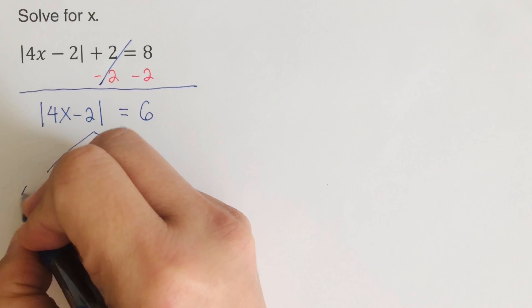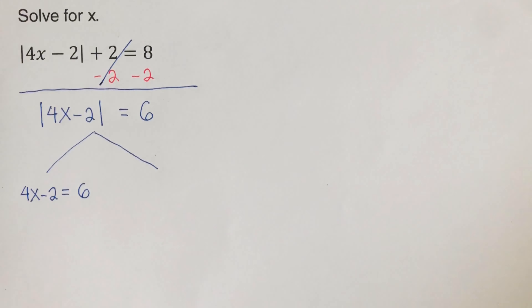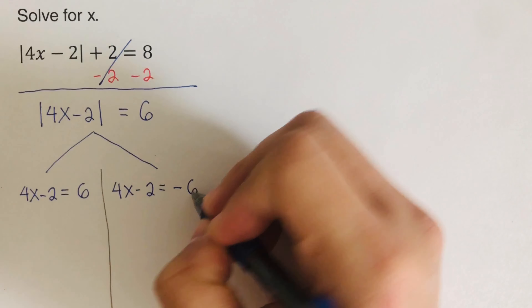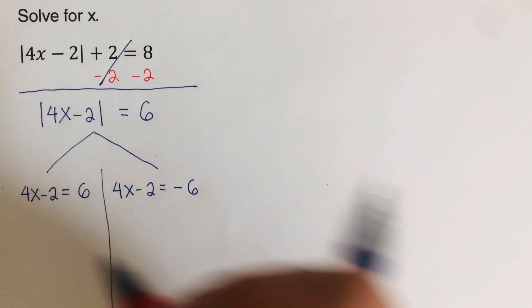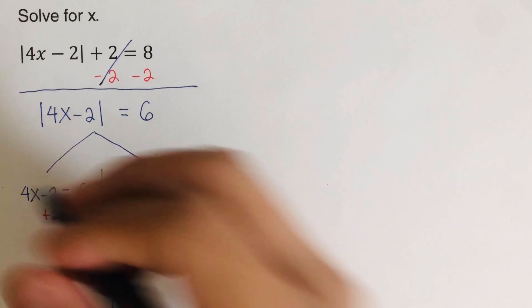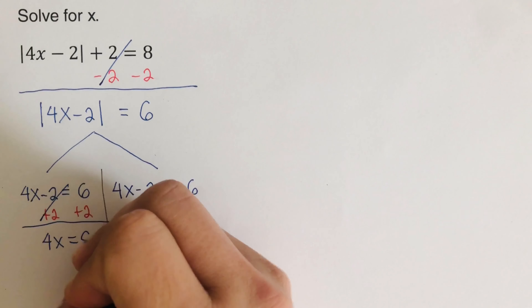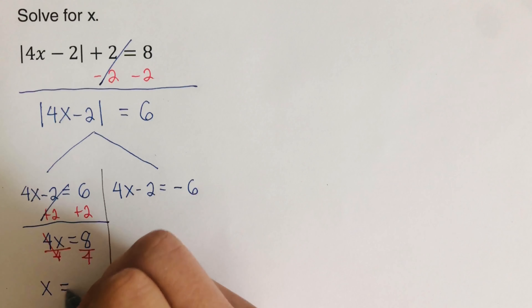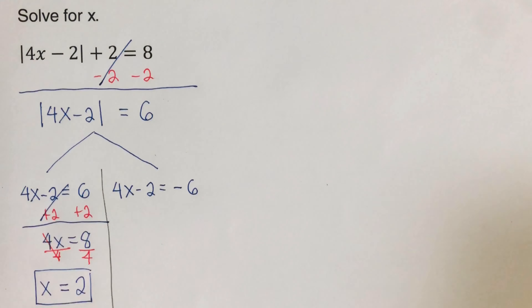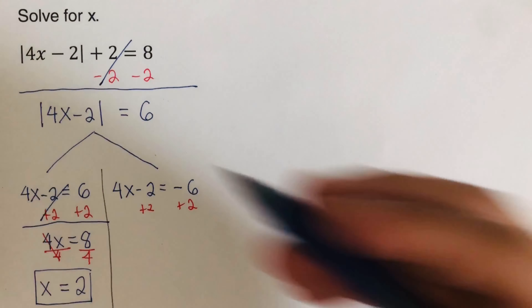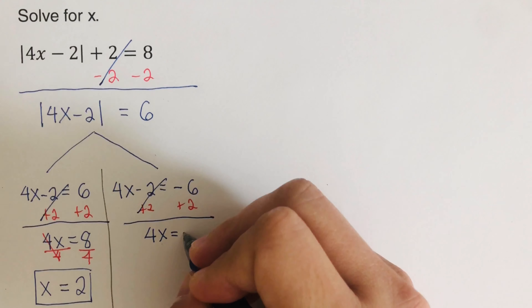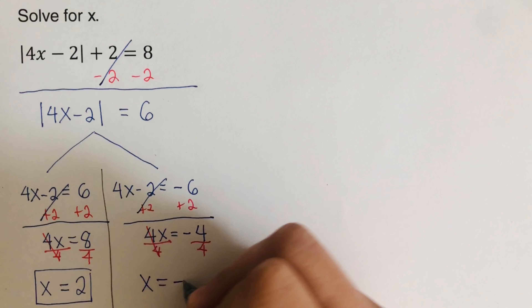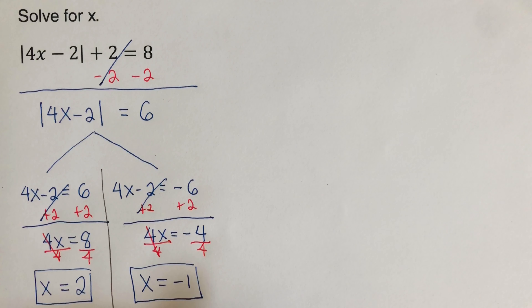Step two: break the equation into two components. Positive component: 4x - 2 = 6. Negative component: 4x - 2 = -6. Solving the first: add 2 to both sides to get 4x = 8, divide by 4, so x = 2. Solving the second: add 2 to both sides to get 4x = -4, divide by 4, so x = -1.